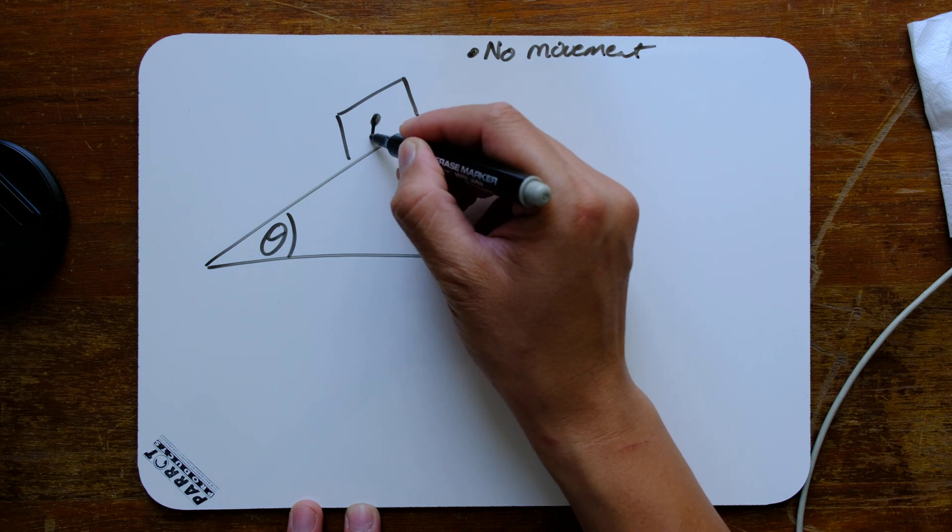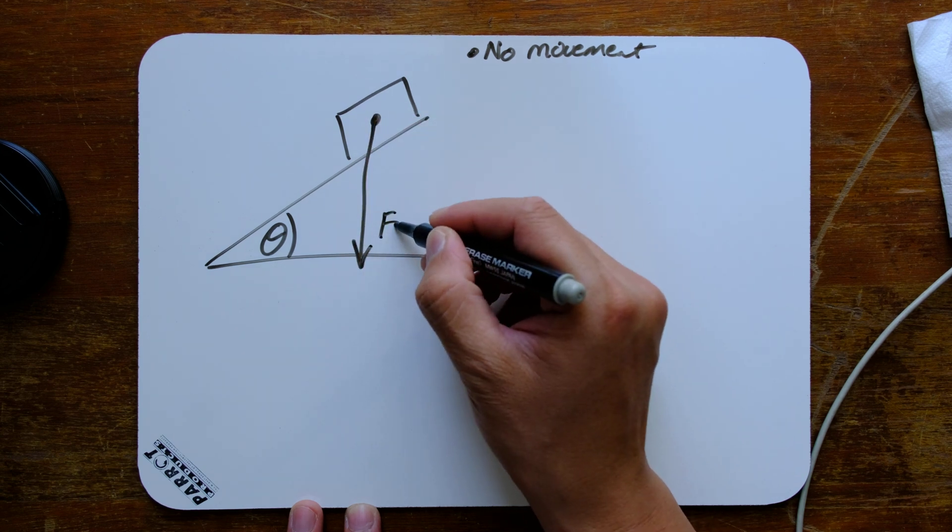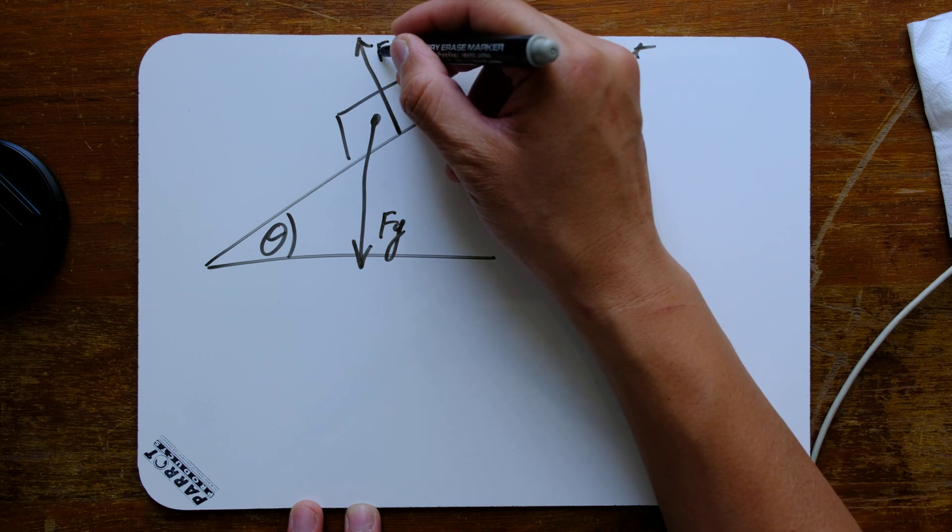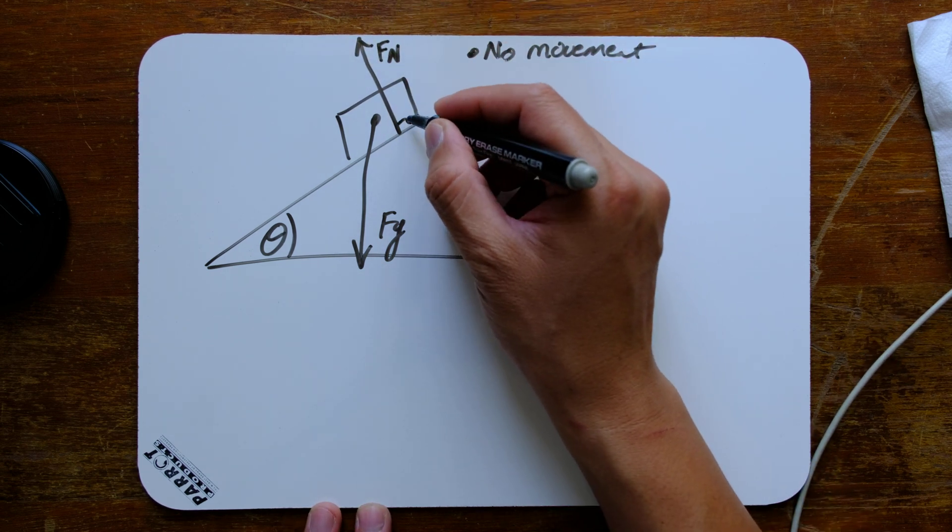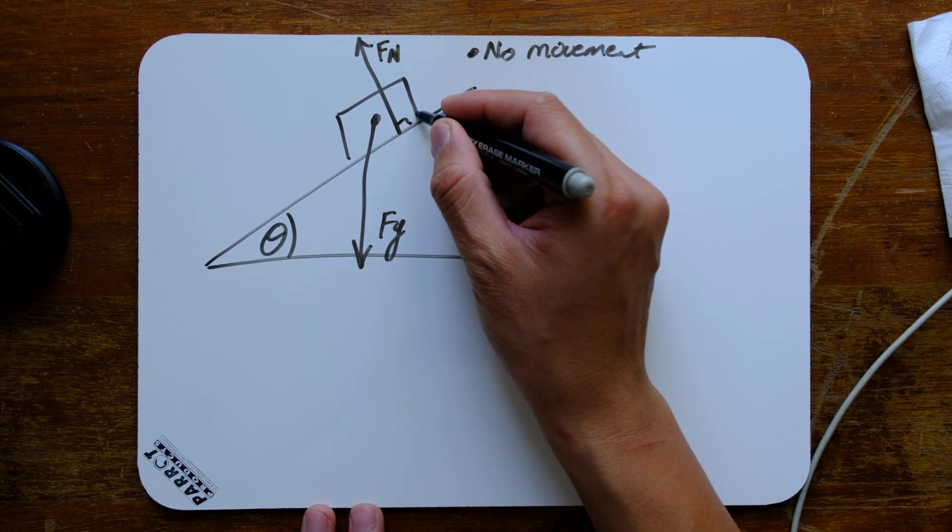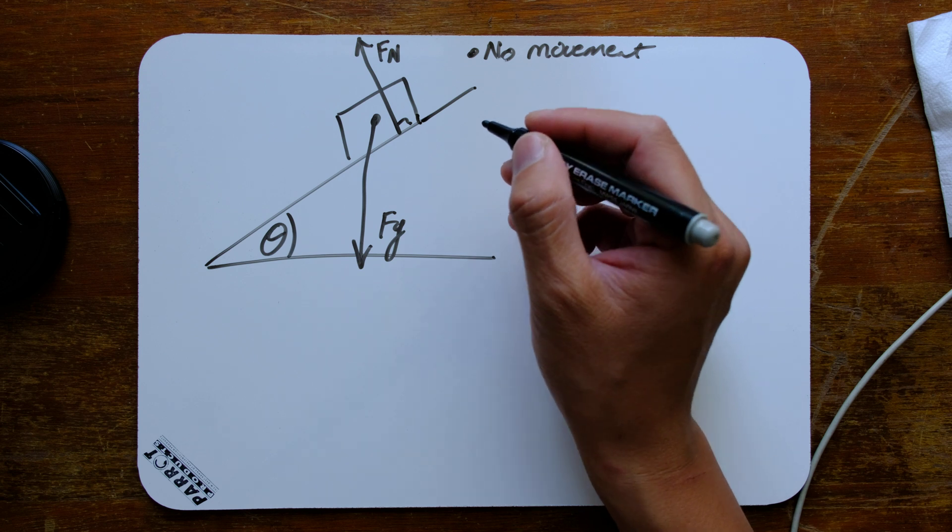Okay, gravity acts in the same direction. But the normal force, as we've explained before, is always going to be perpendicular to the slope. So it looks like it's at a funny angle compared to the force of gravity, but it's actually not. It's still at a normal angle.